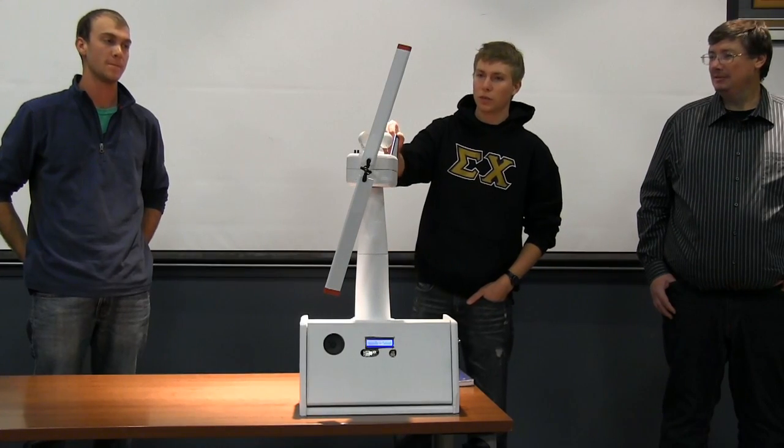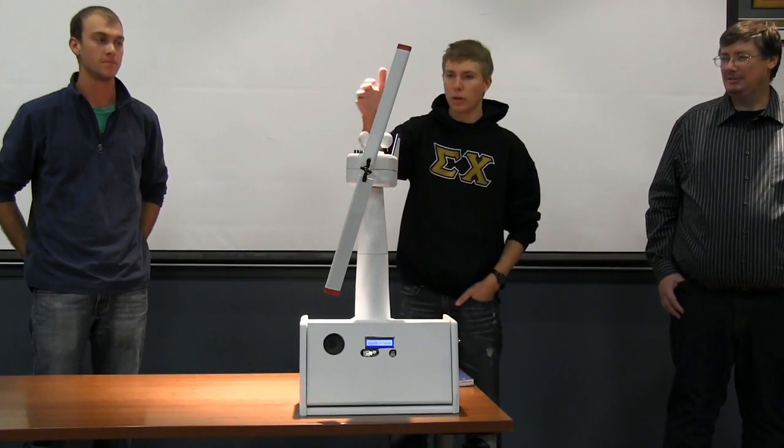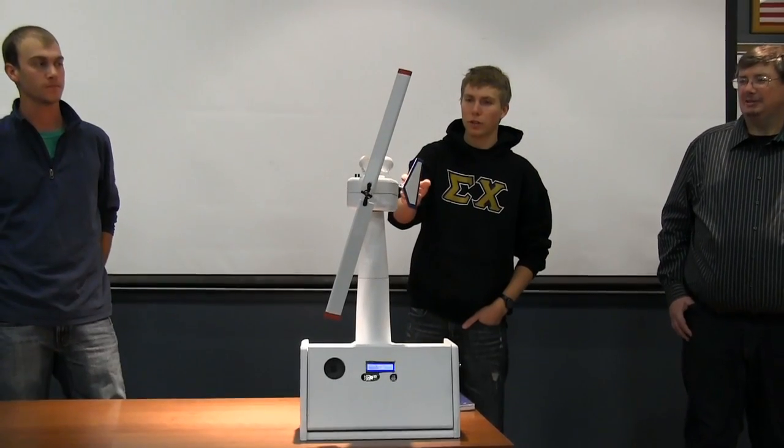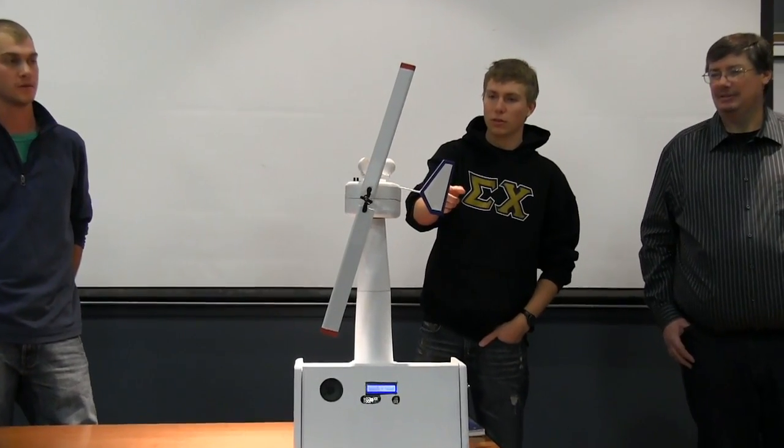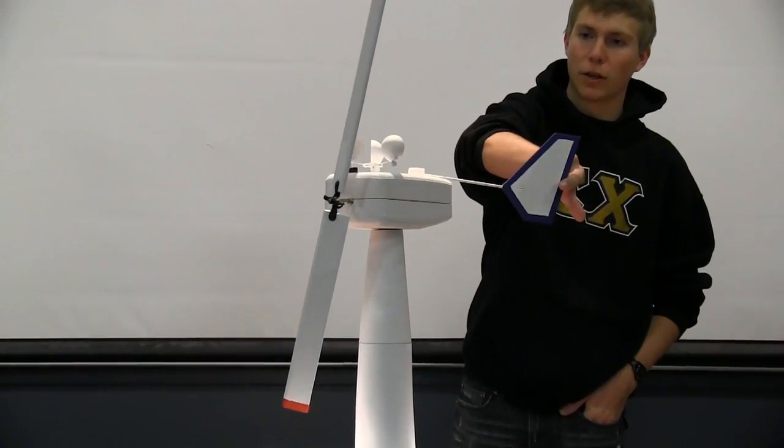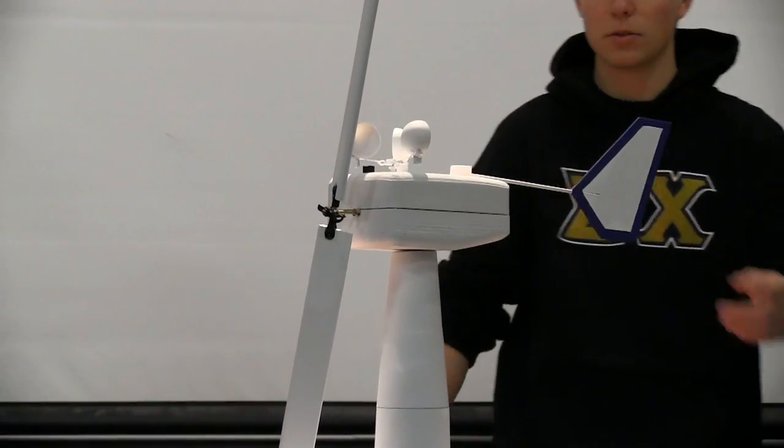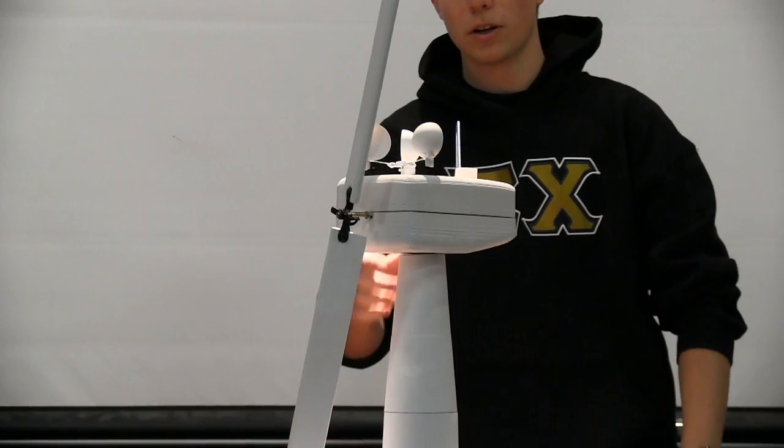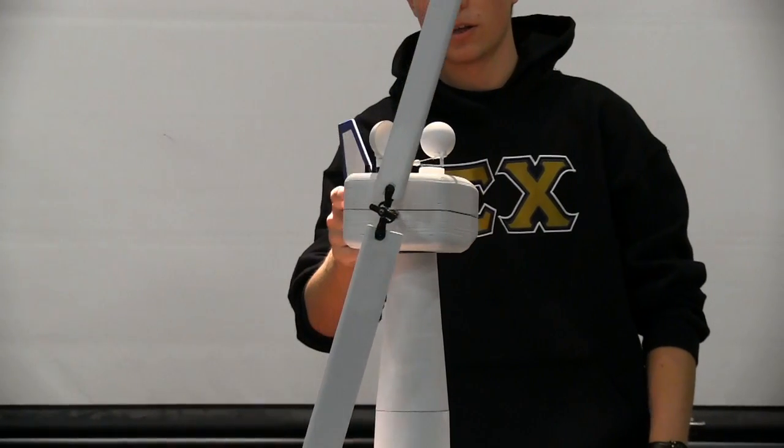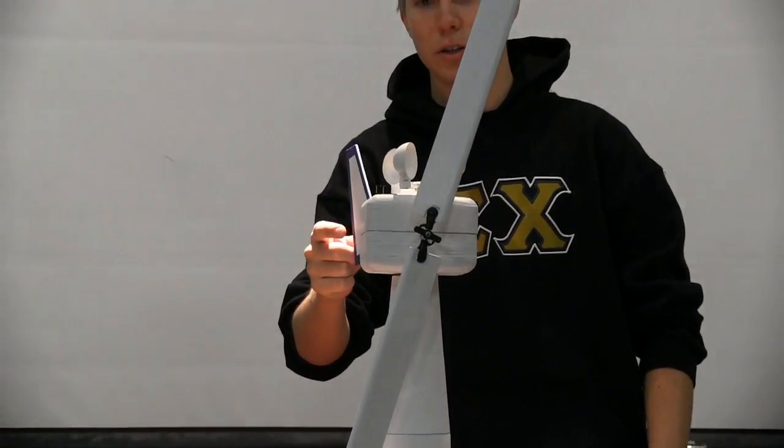The way the actual tail works is the wind will blow the tail into a certain direction. As you can see, once it hits a certain direction, it will rotate until that goes back to zero to face into the wind. So if it's over here, it will rotate until it hits that wind direction, which is zero.